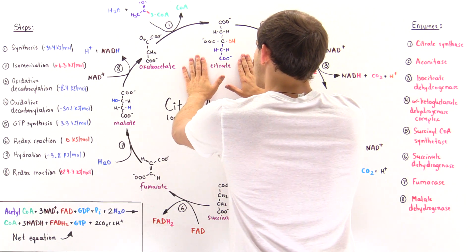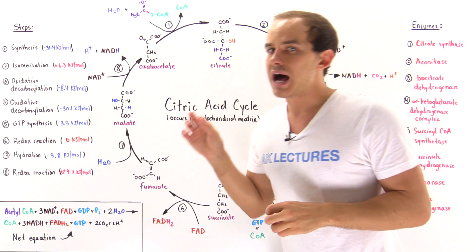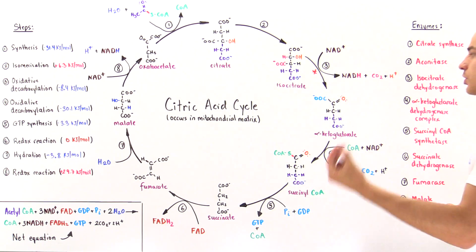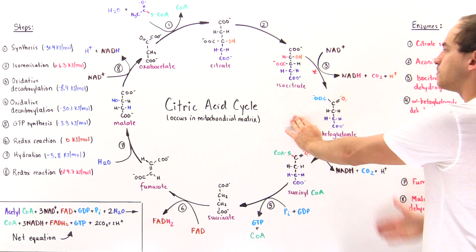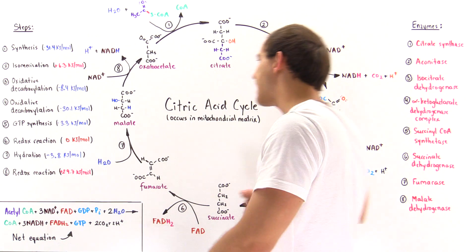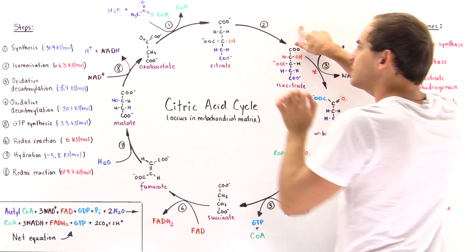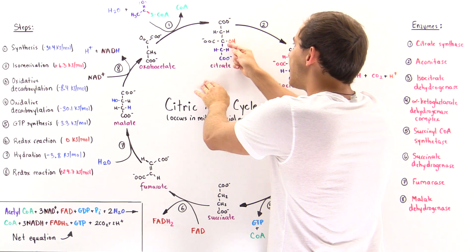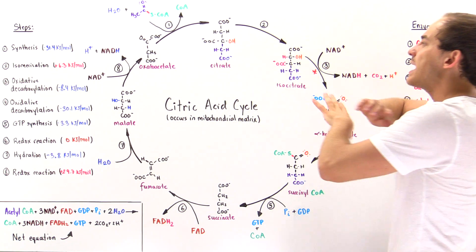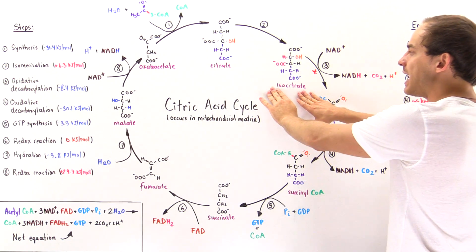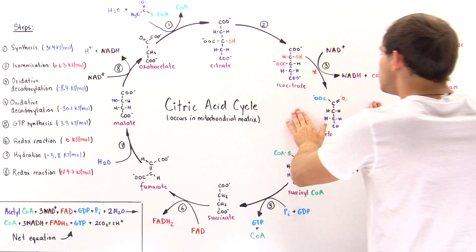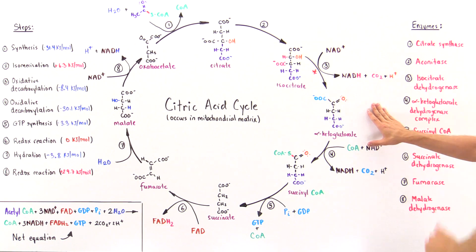Once we form the citrate molecule, it must be transformed into its isomer molecule known as isocitrate, because only the isocitrate can actually undergo the decarboxylation step that takes place in step 3. So in step 2, we have an isomerization reaction that is catalyzed by aconitase. What aconitase does is it basically transfers this hydroxyl group shown in orange from this carbon onto this carbon here. That's the only difference between this citrate molecule and the isomer isocitrate, but now this molecule is activated and ready to undergo the decarboxylation step in step 3.